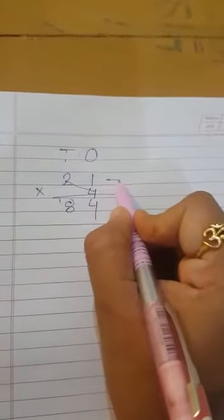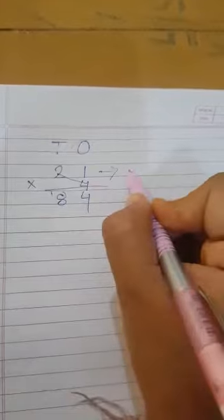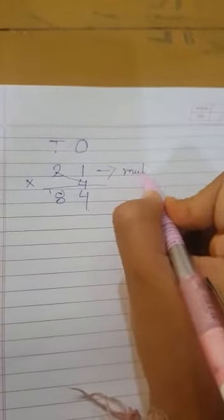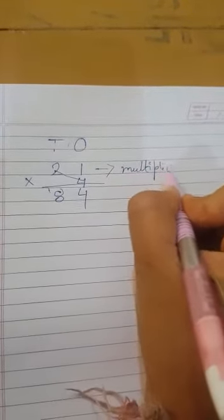Look, the number which is multiplied by another number is known as multiplicand.